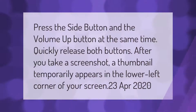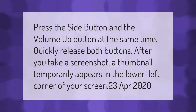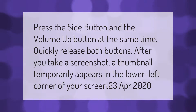Press the side button and the volume up button at the same time, then quickly release both buttons. After you take a screenshot, a thumbnail temporarily appears in the lower left corner of your screen.